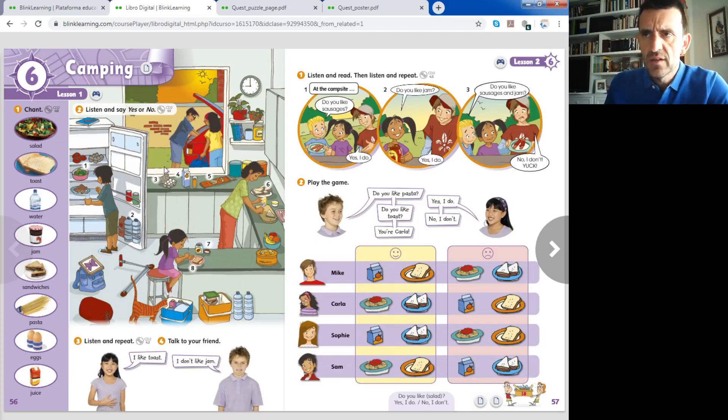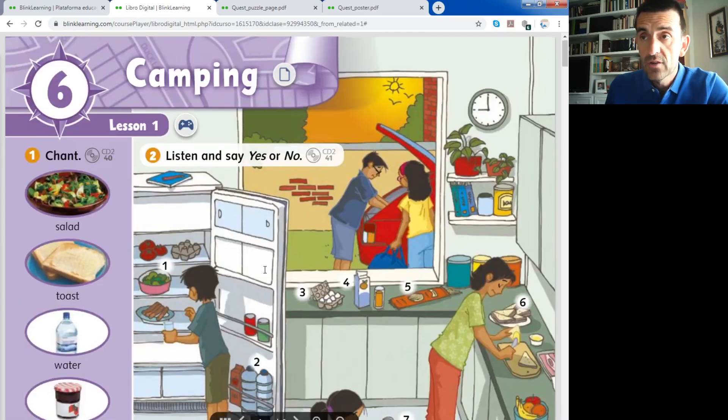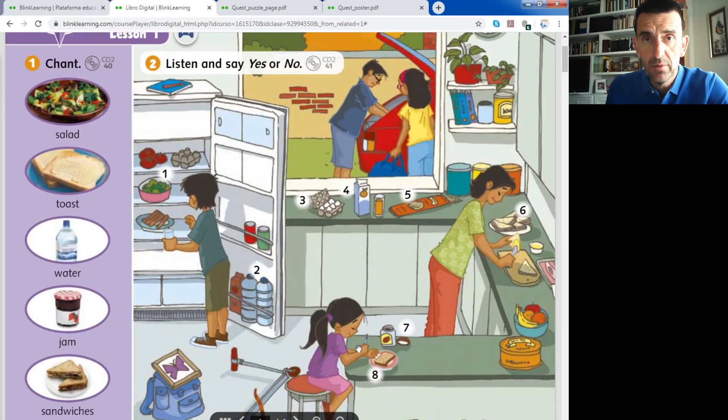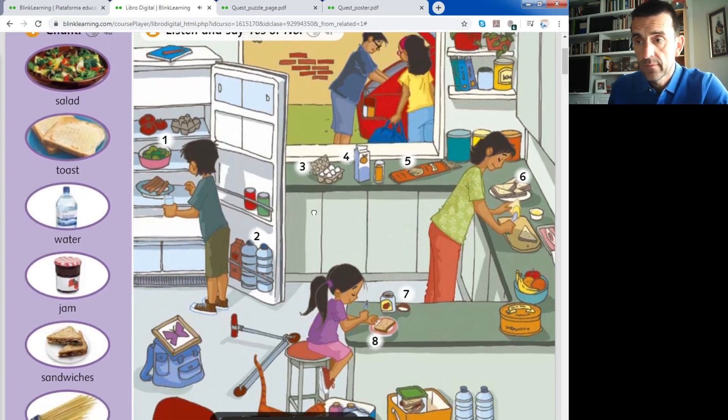Now in activity number two, you have in the picture the family is in the kitchen preparing the breakfast. It's in the morning. They are preparing breakfast and they are in the kitchen. You can see here Lucy, you can see Stan, Mommy, etcetera, Carla outside the car with Dad, etcetera. Listen and say yes or no, listening 41, activity 2.